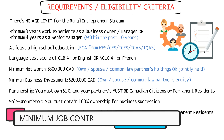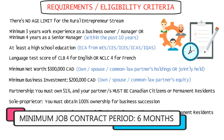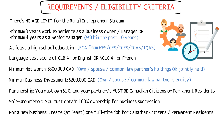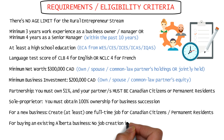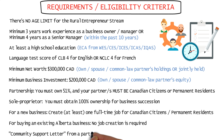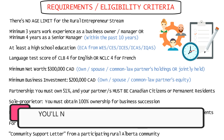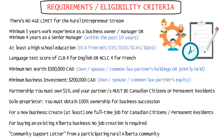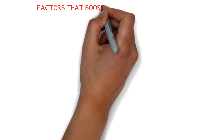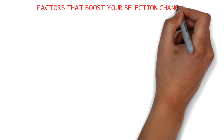These job positions must be for a period of at least six months. For business succession — which is when you buy an existing Alberta business — job creation is not required. You're also going to need a community support letter from a participating rural Alberta community, basically the community where you want to start your business.